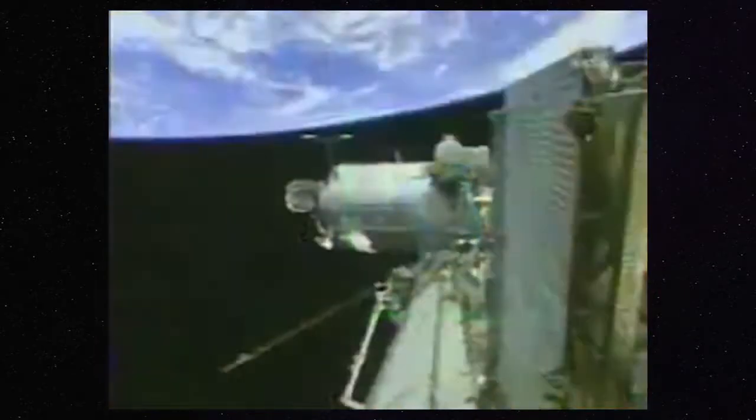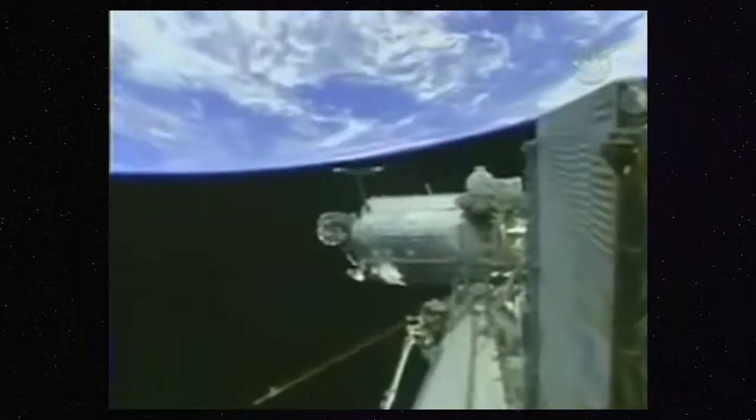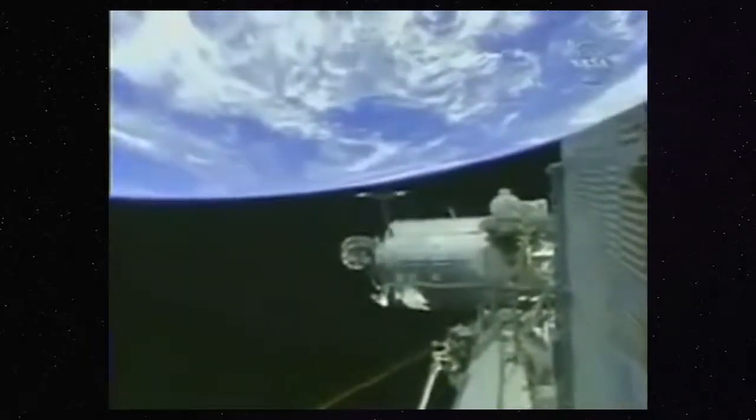First, if you'll remember back to the previous segment, the window Buzz Aldrin was shooting through was square, not round. Second, if they really were in low Earth orbit, the Earth would be moving by quite fast, instead of the relatively static image shown in Apollo 11.